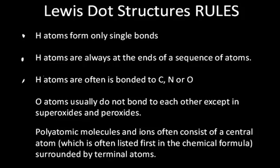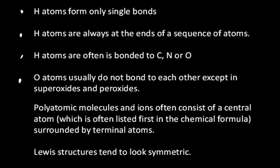Oxygen atoms usually do not bond to each other except in superoxides and peroxides. Polyatomic molecules and ions often consist of a central atom, which is often listed first in the chemical formula, surrounded by terminal atoms. And Lewis structures tend to look symmetric. So these basic rules can help one get started on predicting the best structure for a particular compound.